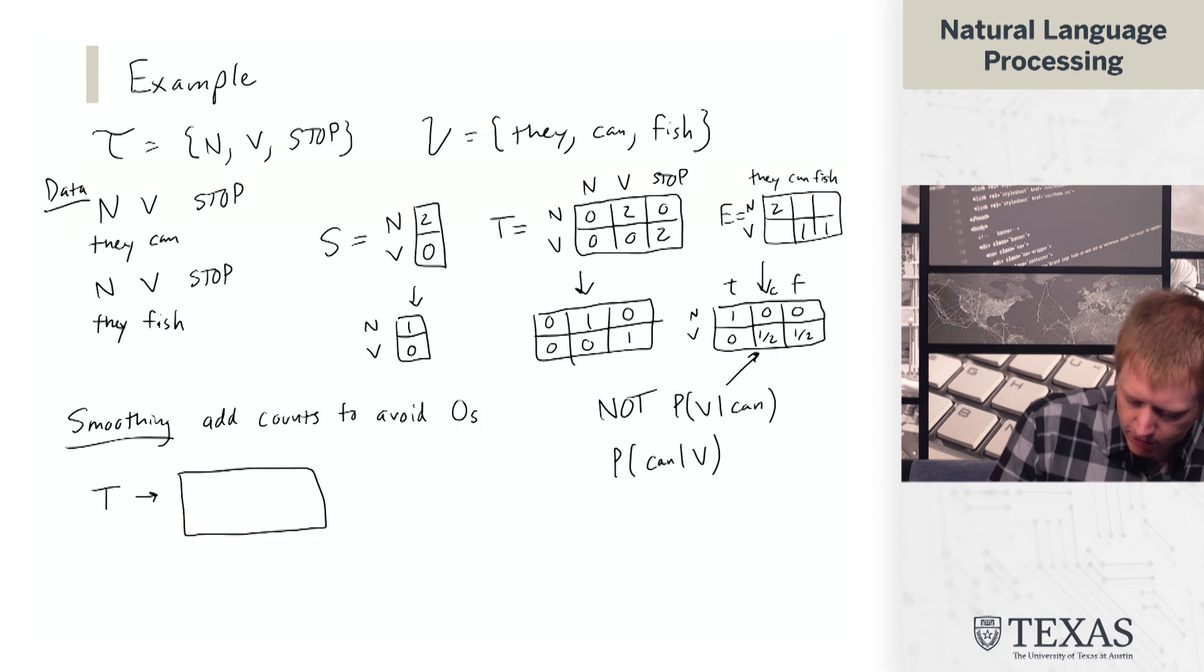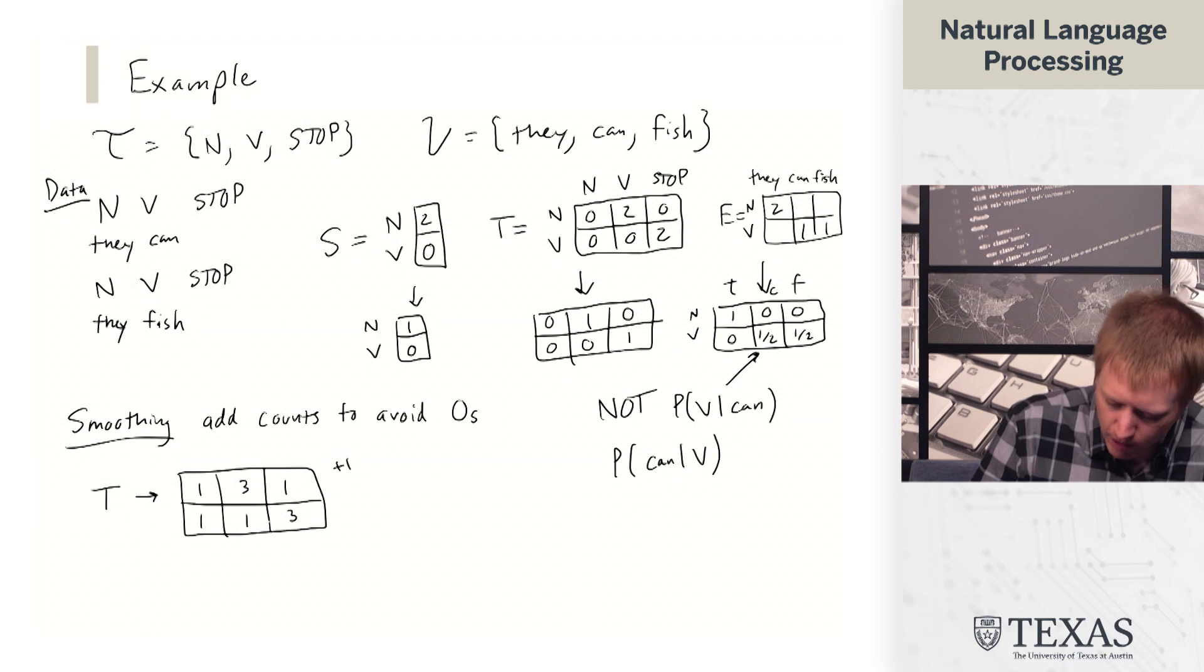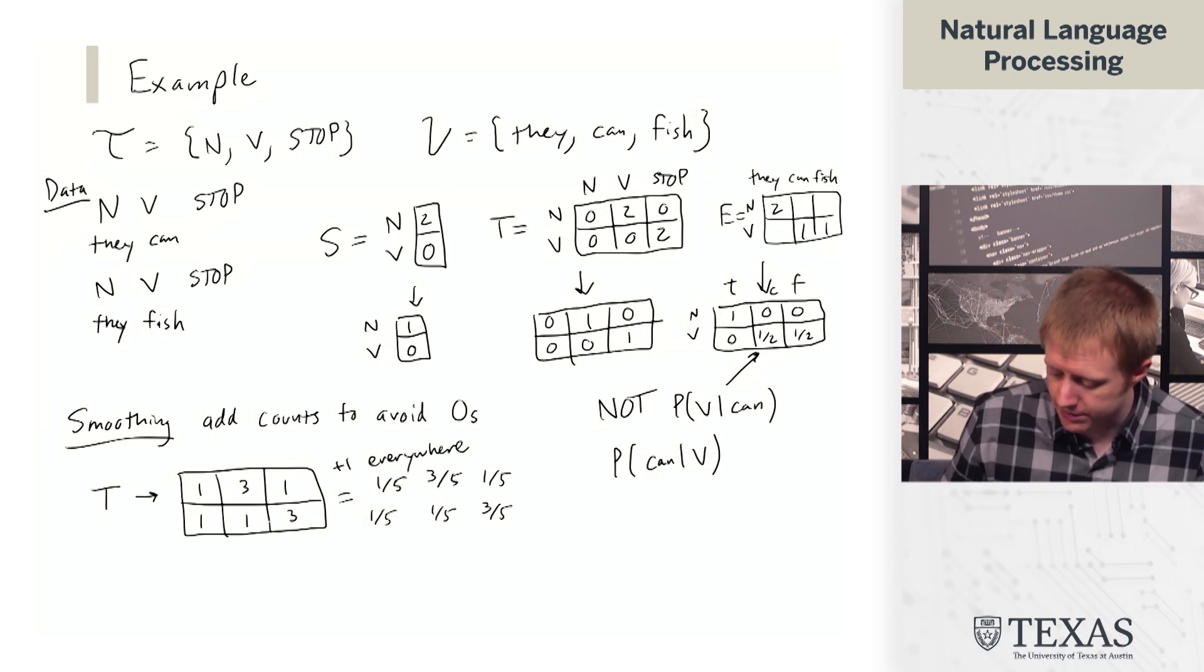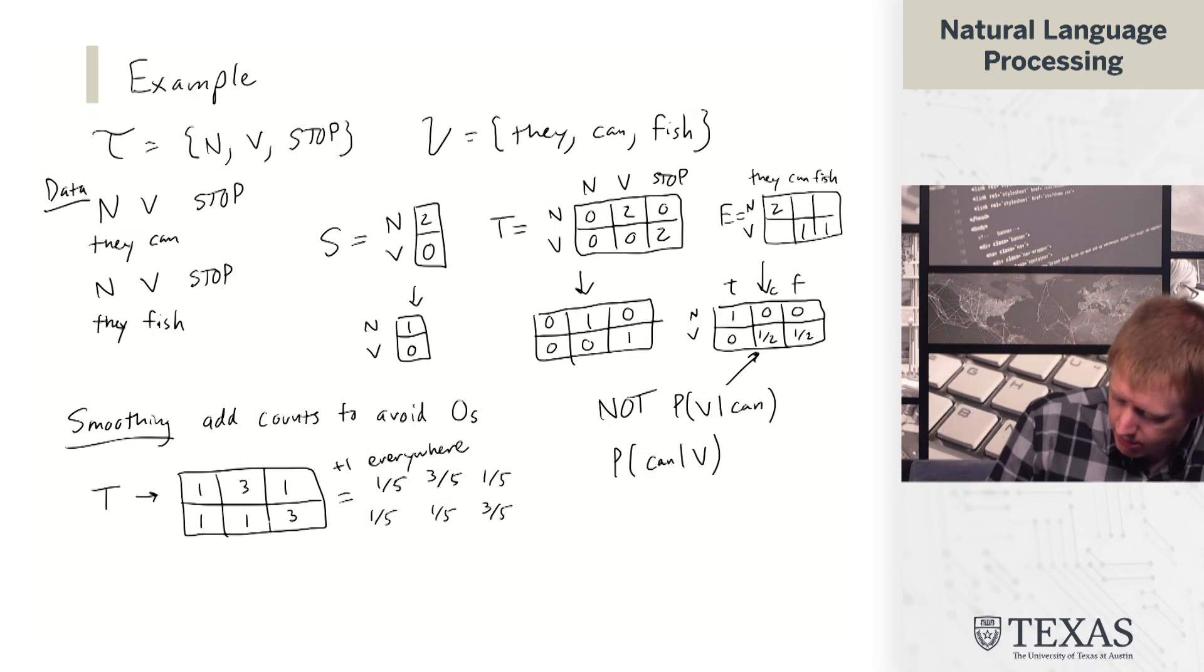So for the sake of math, let's just say that we turn our transition counts into the following. So we just added one everywhere. And then if we normalize this, we get the following.